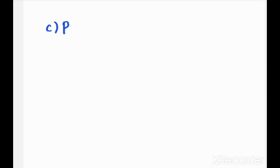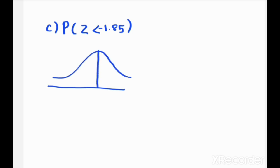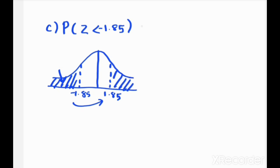Working through part (c): find P(Z < −1.85). On the bell shape, −1.85 is on the negative (left) side. By symmetry of the bell curve, the area to the left of −1.85 equals the area to the right of +1.85. Since we cannot read negative z-values directly from the table, we convert to the positive side: P(Z < −1.85) = P(Z > 1.85) = 0.0322.